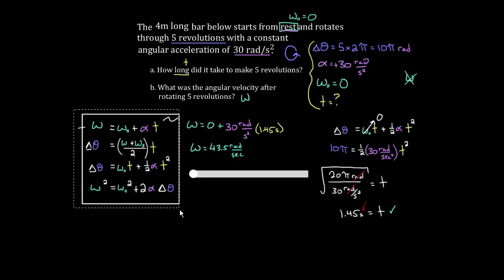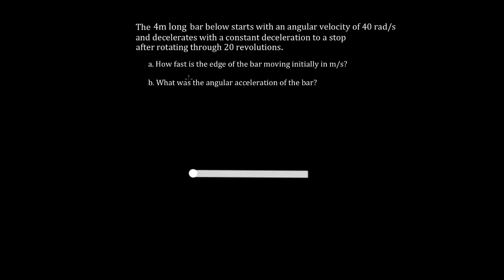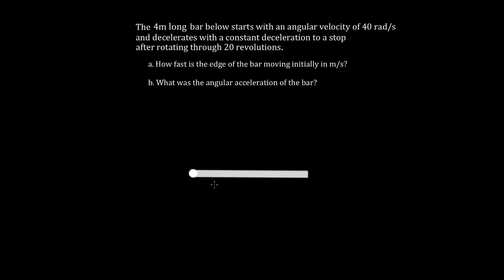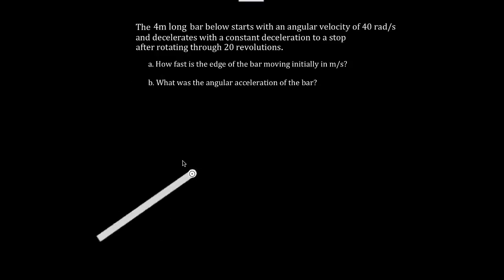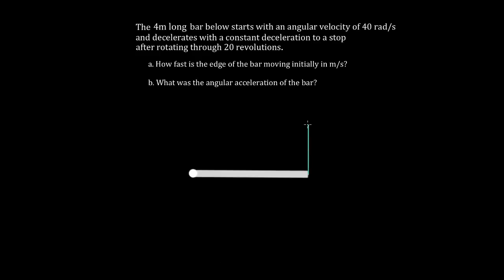Let's do another example. This time the four-meter-long bar doesn't start from rest — it starts with an angular velocity of 40 radians per second, but it decelerates to a stop after rotating 20 revolutions. Part a asks: how fast is the edge of the bar moving initially, in meters per second? In other words, this point at the end of the bar has some speed, and we want to know what that velocity is in meters per second.